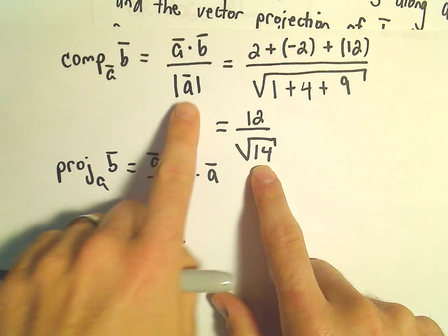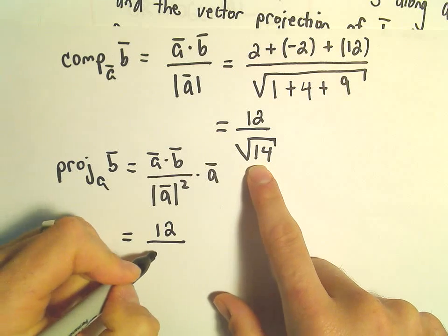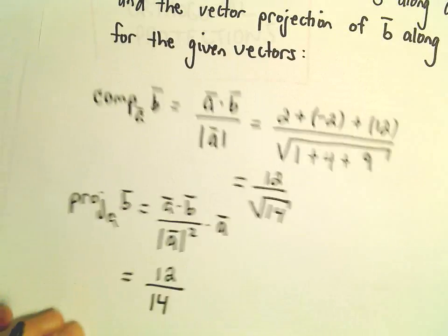Well, the denominator was the magnitude, so we'll just take the square root of 14 and square it, and that'll just leave us with 14, and then we multiply that by our vector A.